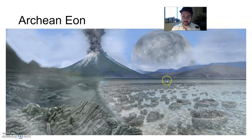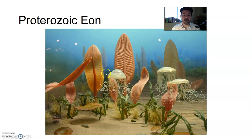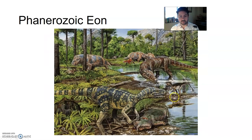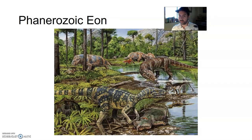There was volcanic activity and still some bombardment. The moon was much closer. The Proterozoic Eon featured multi-celled, soft-bodied organisms in the ocean — different worms, seaweeds, and jellyfish. Then the Phanerozoic is when things we started to recognize popped up. That's the Eon we're currently in.